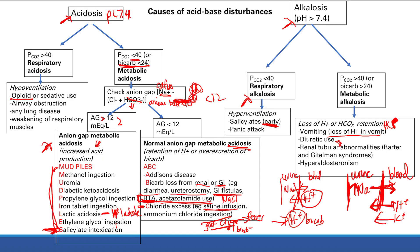Finally, hyperaldosteronism — pretty much the opposite of Addison's disease. Addison's disease is where you're missing aldosterone; hyperaldosteronism is where you have too much aldosterone activity. Aldosterone stimulates sodium reabsorption and H+ excretion, and K+ excretion. So again, you're excreting H+ and getting a metabolic alkalosis.